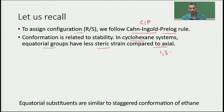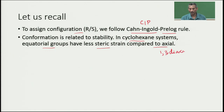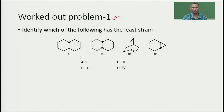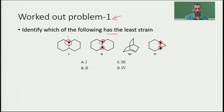In the axial orientation, there is a 1,3-diaxial interaction, whereas in the equatorial orientation there is no such interaction, which does not destabilize the system. In the first problem, we identify which of the following structures has the least strain. In these old book-style structures, a thick dot represents a group pointing upwards or towards the observer.